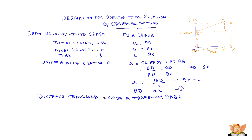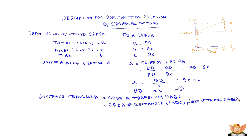The trapezium can be split into one rectangle OADC and a triangle ABD. So the total area becomes the area of rectangle OADC plus the area of triangle ABD, which is half into base into height, that is AD into BD.